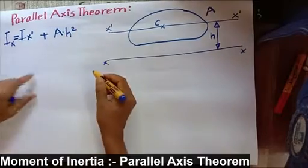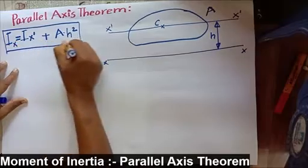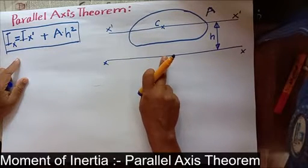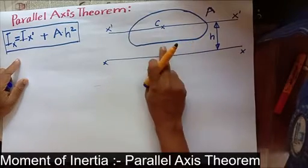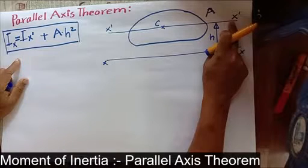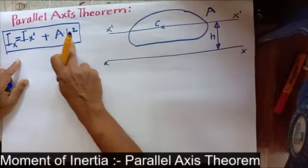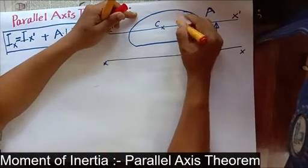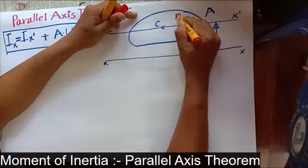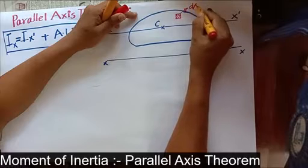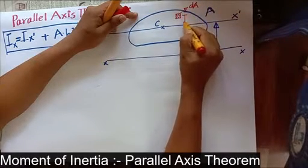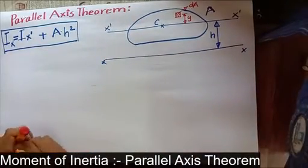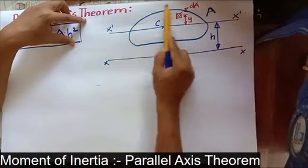In such a case we can say that Ix equals the moment of inertia of the centroidal axis plus the product of area and the distance squared — let the distance be h — so A times h squared. This is the Parallel Axis Theorem. Now we want to prove this, so for that consider a small area dA, and the distance from the centroidal axis to dA is represented by y.